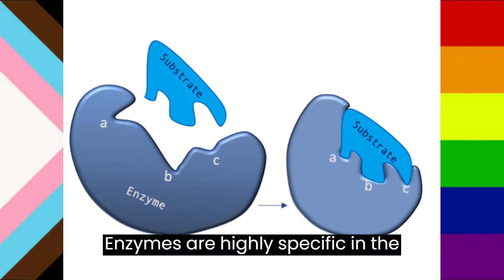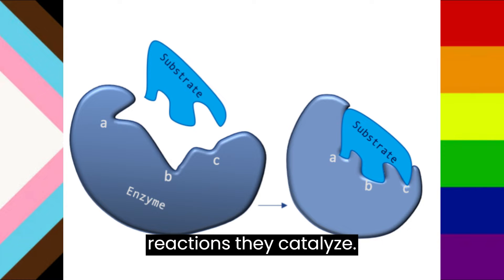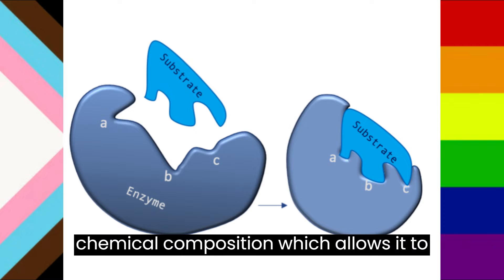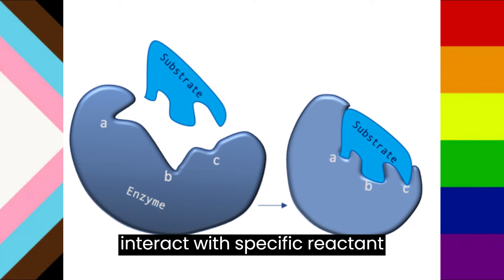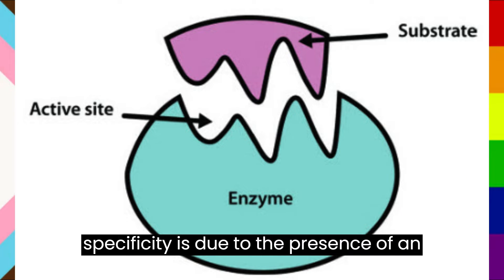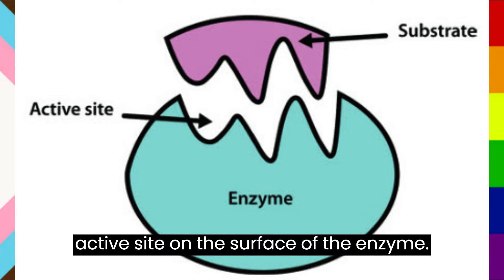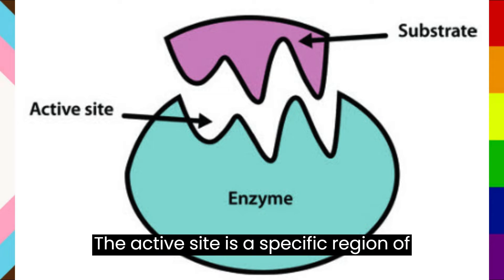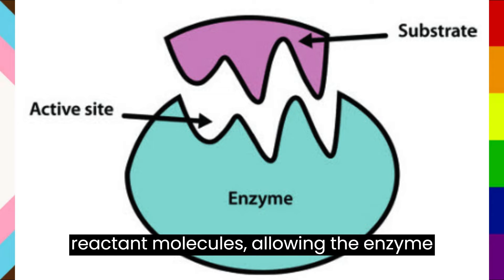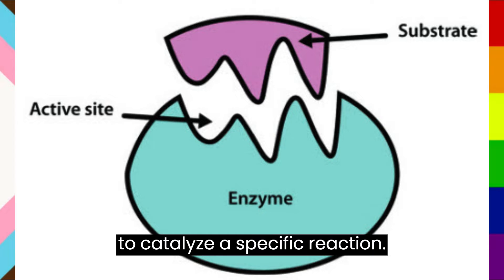Enzymes are highly specific in the reactions they catalyze. Each enzyme has a unique shape and chemical composition, which allows it to interact with specific reactant molecules. This specificity is due to the presence of an active site on the surface of the enzyme. The active site is a specific region of the enzyme that interacts with the reactant molecules, allowing the enzyme to catalyze a specific reaction.